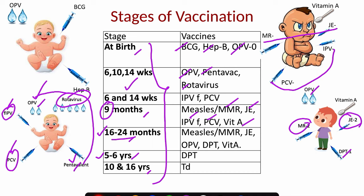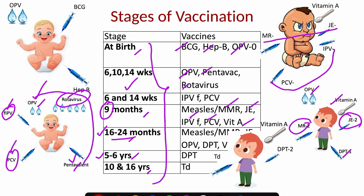Every 6 months after 1 year, we need to give Vitamin A till 5 years of age. At 5 to 6 years of age, we need to give the DPT second booster. And at 10 and 16 years of age, we need to give the TD vaccine.